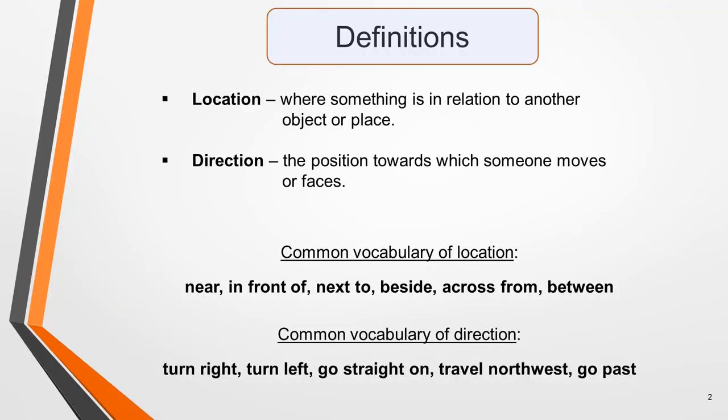Here are definitions of these two types of vocabulary, to make sure that you understand the difference between them, and a few examples of each type. Location is where something is in relation to another object or place. Direction is the position towards which someone faces or moves.